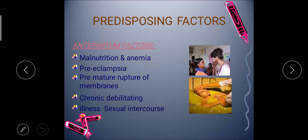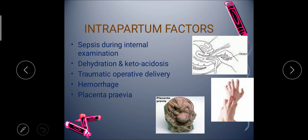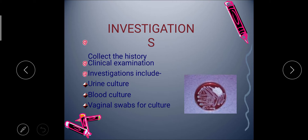Risk factors are categorized into antepartum and intrapartum periods. In the antepartum period — during pregnancy before delivery — if the mother is malnourished or anemic, there is a chance of getting infection; also pre-eclampsia, high blood pressure, premature rupture of membranes, chronic debilitating illness, and sexual intercourse are antepartum factors. Intrapartum factors during delivery include: sepsis during internal examinations if proper aseptic measures are not followed, dehydration, ketosis, traumatic operative delivery, hemorrhage, or placenta previa. These are causes and risk factors that can cause infection during delivery.